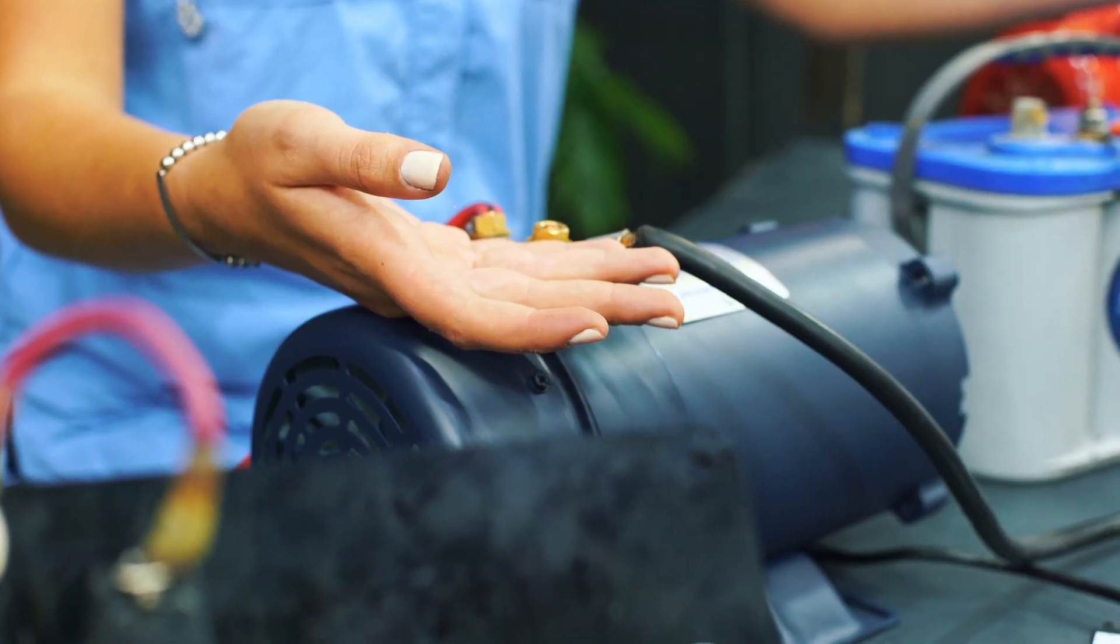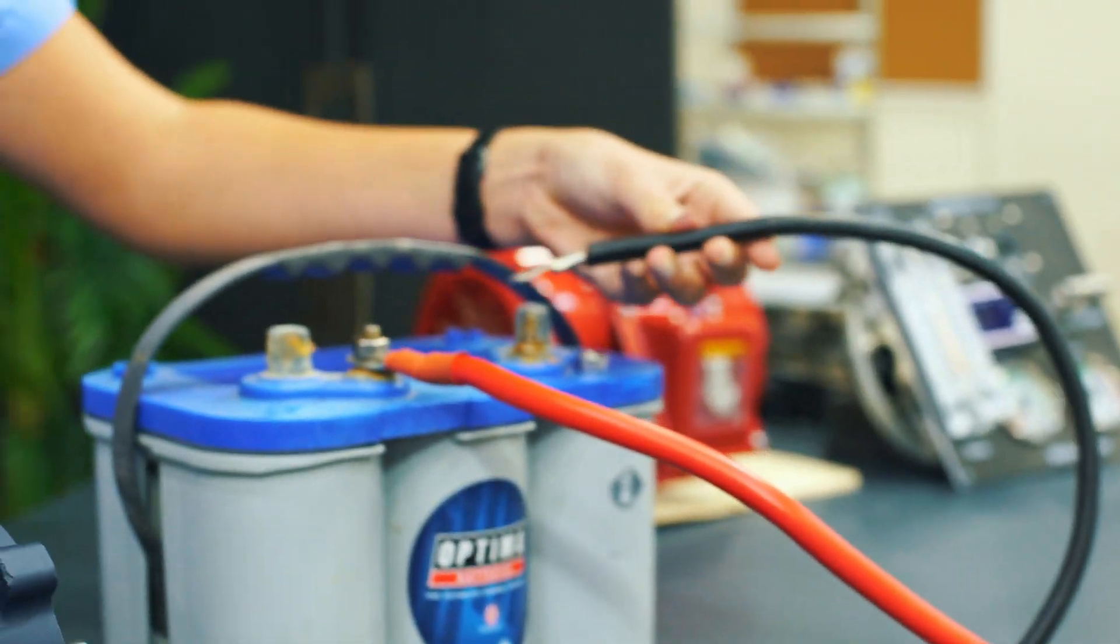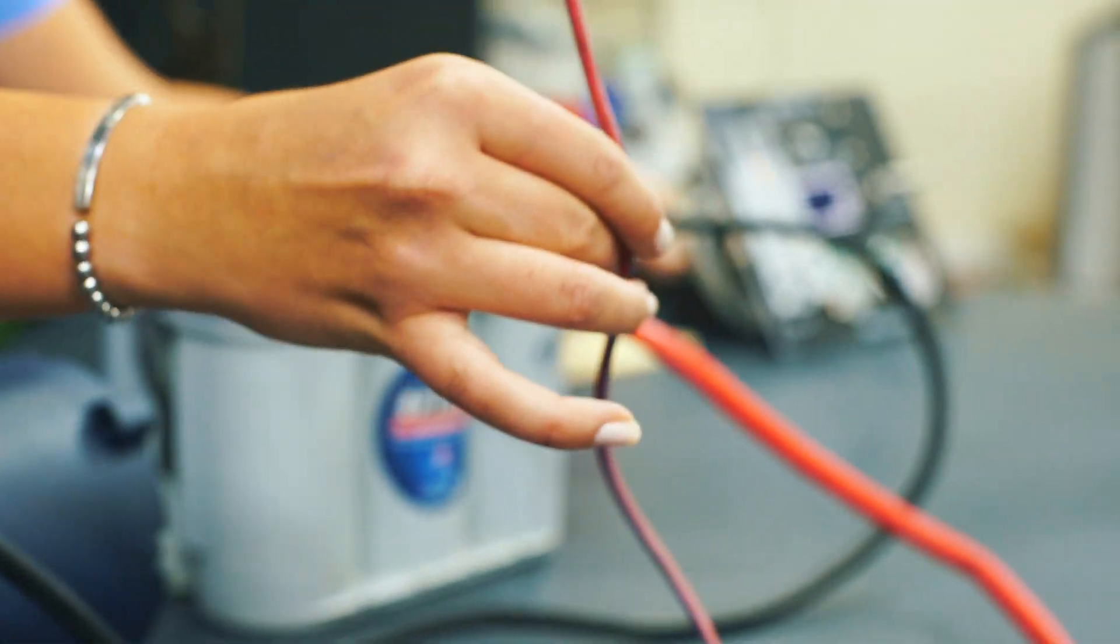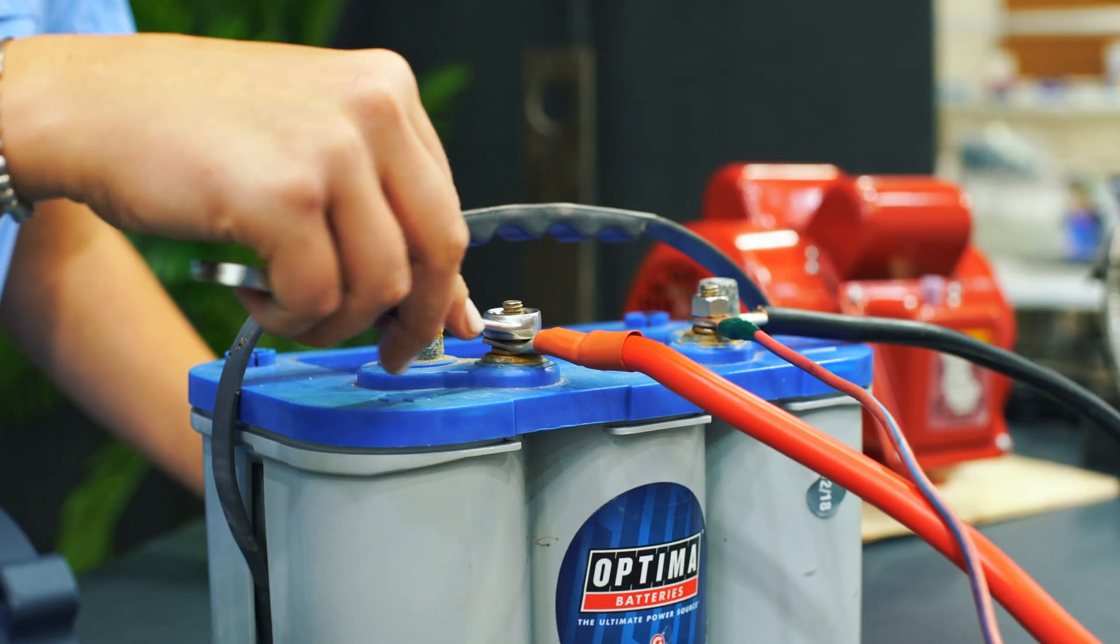Then we will connect the negative wire from the motor to the negative terminal of the battery. Connect the negative boost pump wire to the negative terminal of the battery as well. Secure with your wrench.